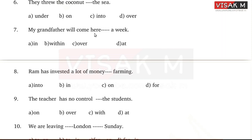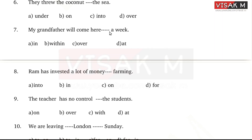My grandfather will come here dash a week. Options: A - in, B - within, C - over, D - at. The answer is: within a week. Within a week — that is the correct preposition.